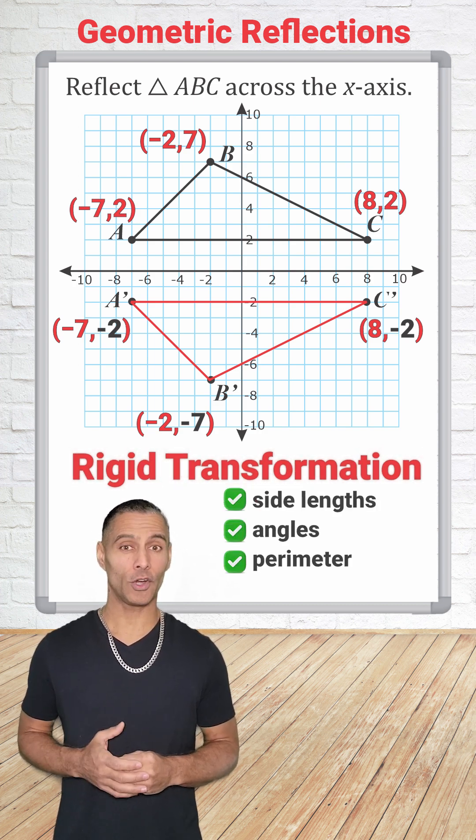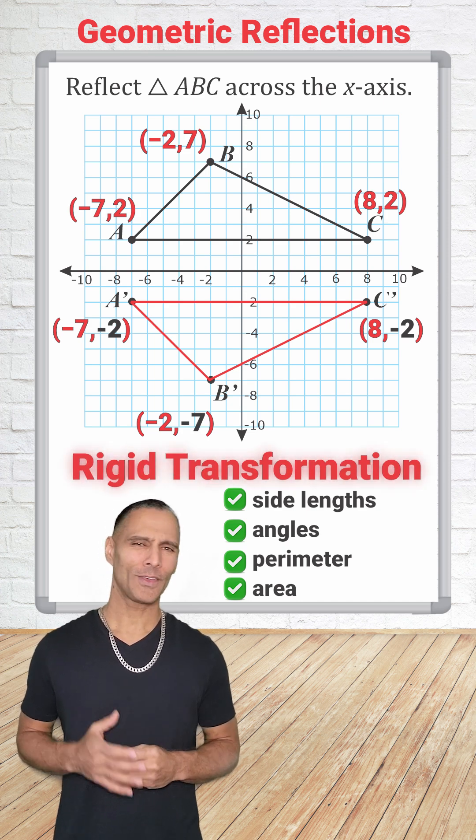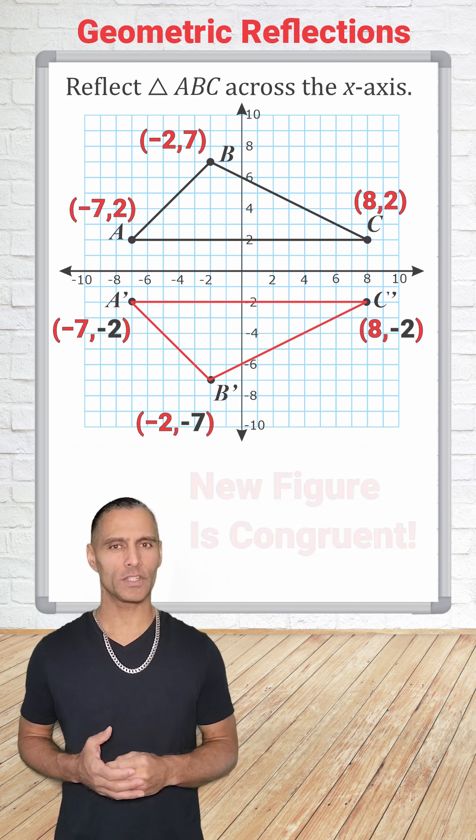The side lengths, angles, perimeter, and area will all remain the same. Therefore, the new figure is congruent to the original.